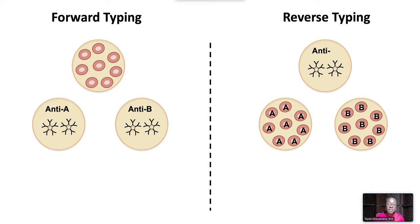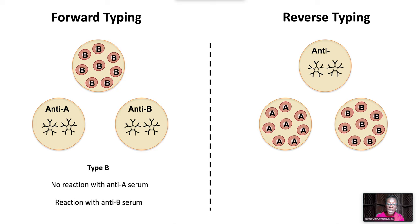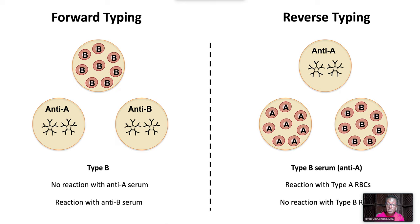For type B red cells, forward typing will show no reaction with anti-A serum and a reaction with anti-B serum. In reverse typing, the anti-A serum will cause a reaction with type A red cells but no reaction with type B red cells.